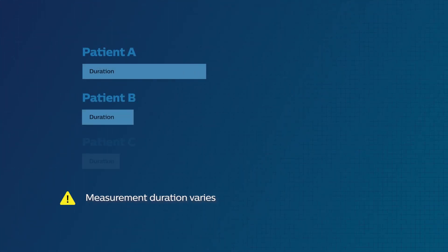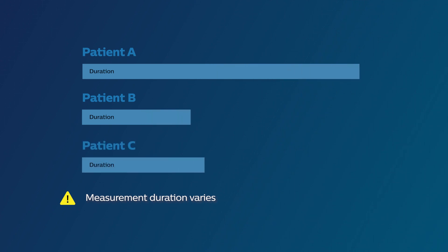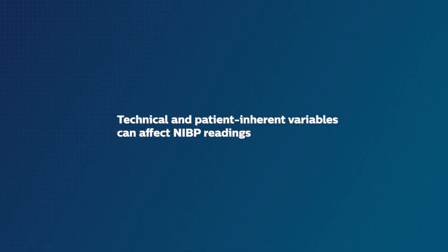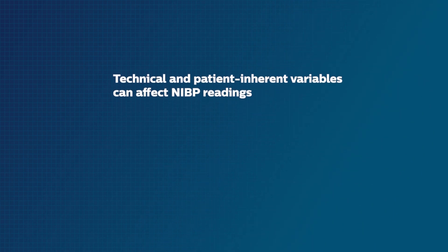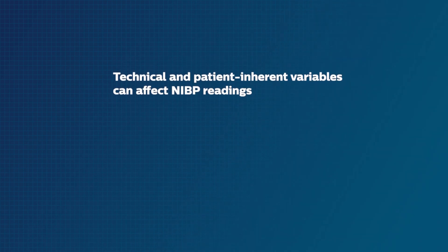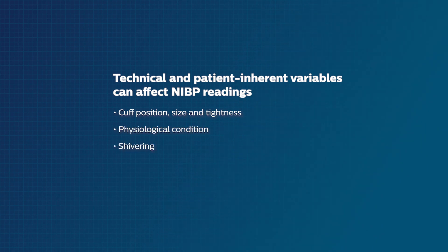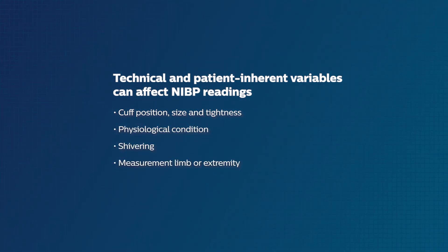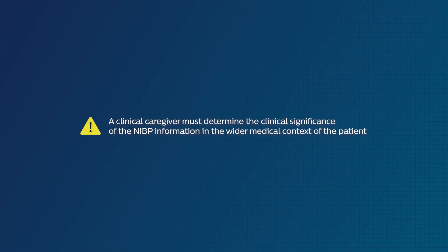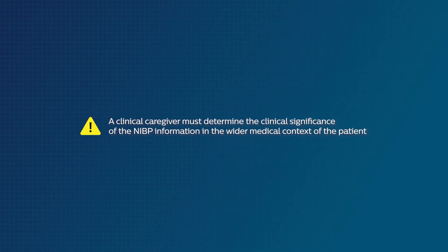Measurement duration varies based on patient and measurement conditions. NIBP readings can be affected by technical variables such as the position of the cuff in relation to heart level and cuff size and tightness, as well as patient inherent variables such as physiological condition, shivering, the measurement limb or extremity, and physical exercise. Therefore, a clinical caregiver must determine the clinical significance of the NIBP information in the wider medical context of the patient.